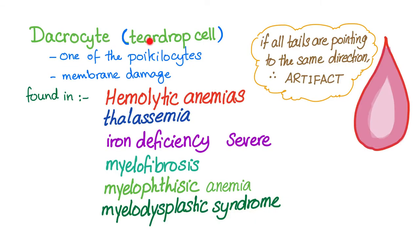So, a dacrocyte or teardrop cell is one of the poikilocytes, not an anisocyte. There is membrane damage to the red blood cell membrane. They are found in many conditions. However, it could be an artifact. How to know if it's an artifact? If all the tails are pointing to the same direction, it's an artifact.